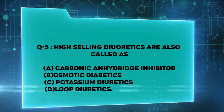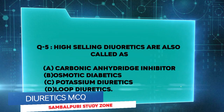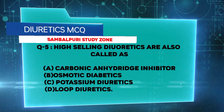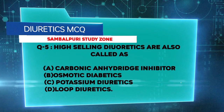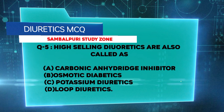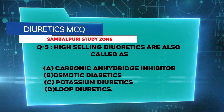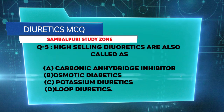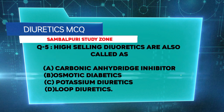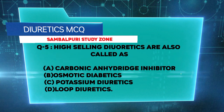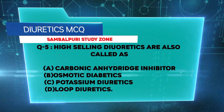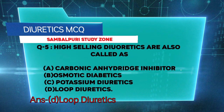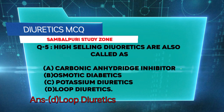High-ceiling diuretics are also called: carbonic anhydrase inhibitors, osmotic diuretics, potassium diuretics, or loop diuretics? The right answer is loop diuretics.